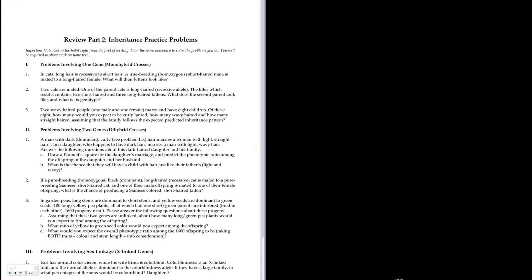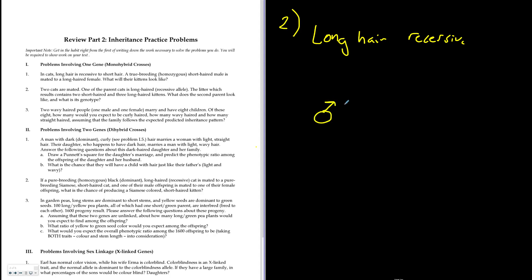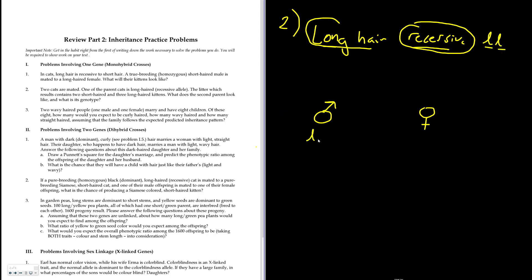Question two: two cats are mated, one of the parent cats has long hair which is recessive. The litter contains two short-haired and three long-haired kittens. You need to figure out the genotype of the second parent. Since one parent has long hair, it must be homozygous recessive (ll).